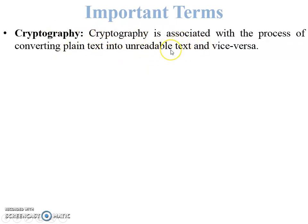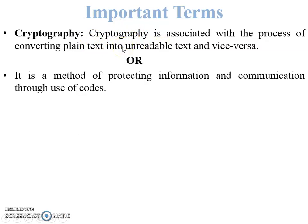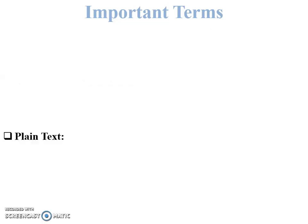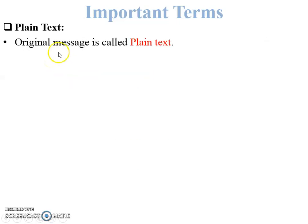As you can see, plain text is converted into unreadable text, and from the receiver's side, unreadable text is converted back into plain text — the original message. This is called cryptography. Another definition: cryptography is a method of protecting information and communication through the use of codes.